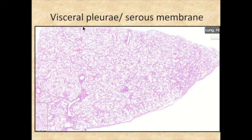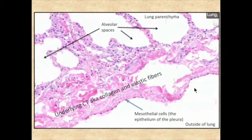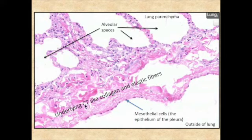In this section, you can see the cut part of the lung continuous with the rest of the lung parenchyma. There's a slightly darker pink line — this is the site of the visceral pleura. Zooming in closely, you can see the simple squamous mesothelium — called mesothelium because of its derivation — on the outside of the pleura. Underneath is the underlying connective tissue, and it's continuous with the lung parenchyma; alveolar spaces are visible in this area.